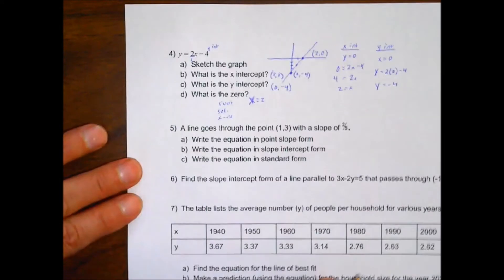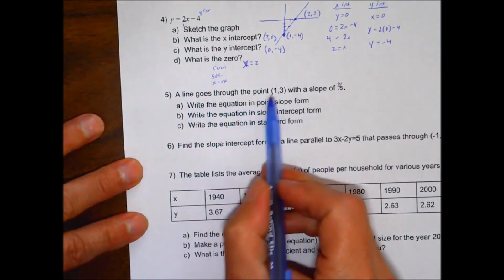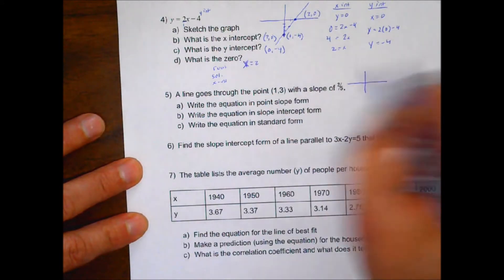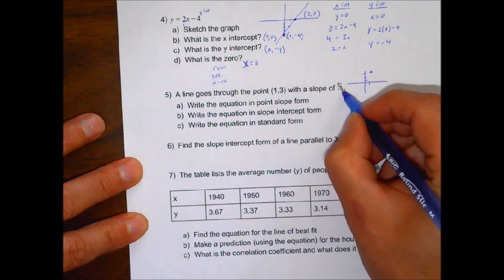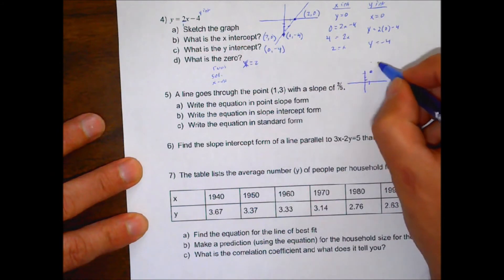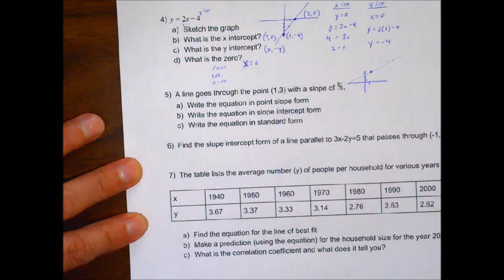Number 5. So you don't have to do this part, but if you get a visual for it, it has a point of 1, 3. It's going to go through that point. It's going to have a slope of 2 fifths. So it would go up 2 and over 5. Our graph would look something like that. We want the equation of that.